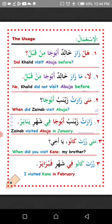Al-Istimal — now the usage. Number one: Hal zhara Halidun Abuuja min qabl? Did Halid visit Abuuja before? The answer: La — no. Ma zhara Halidun Abuuja min qabl — Halid did not visit Abuuja before.